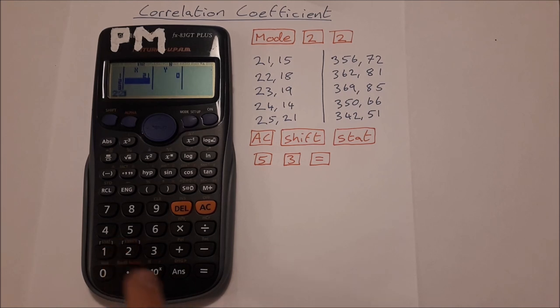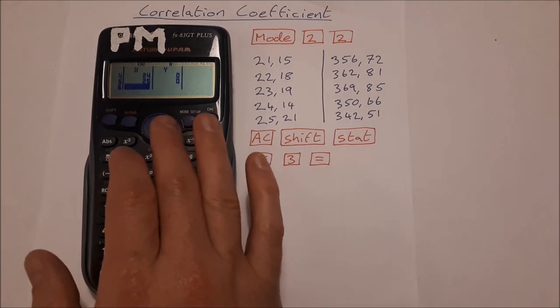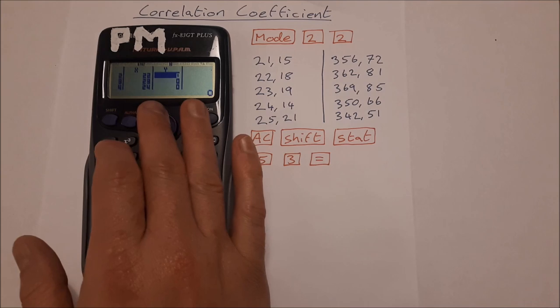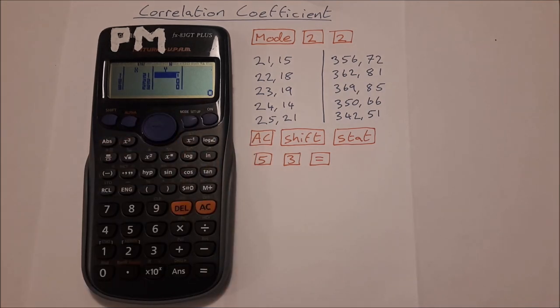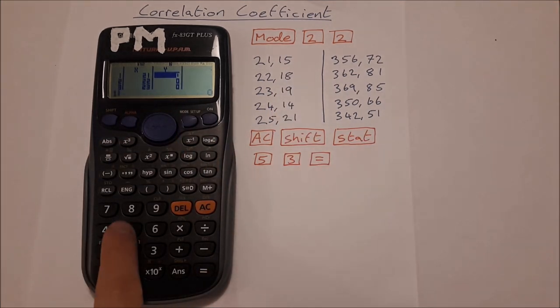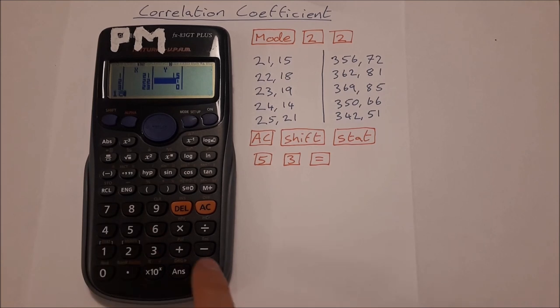So we start off with the x coordinates: 21, and then you press equals to bring onto the next line, 22 equals, 23 equals, 24 equals, 25 equals. That's all the x coordinates. Use your directional arrows here to go back up and do the y coordinates: 15 equals, 18 equals, 19 equals, 14 equals, and 21 equals.